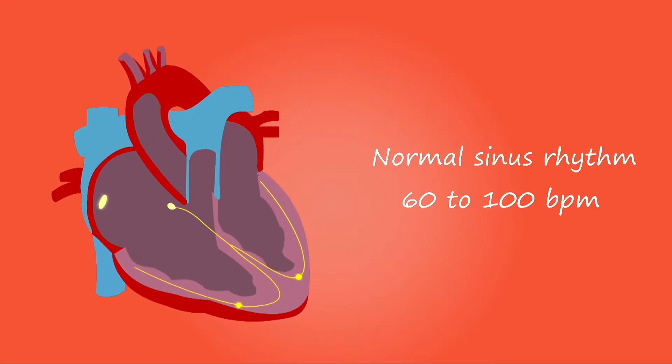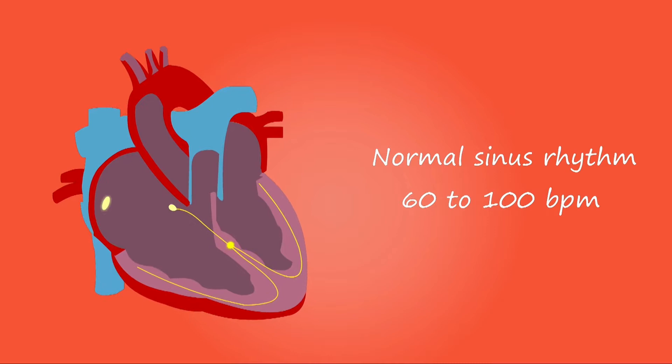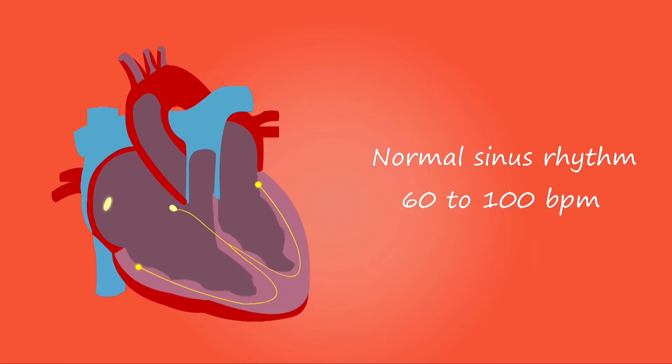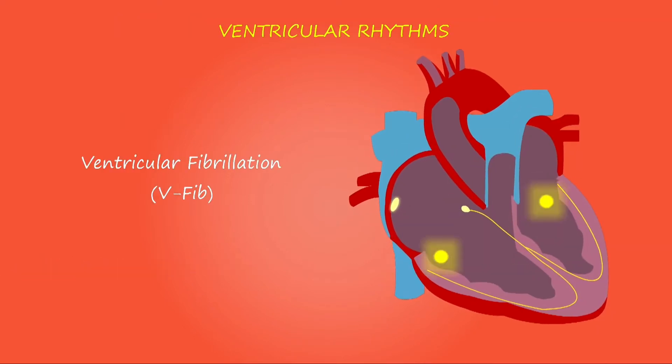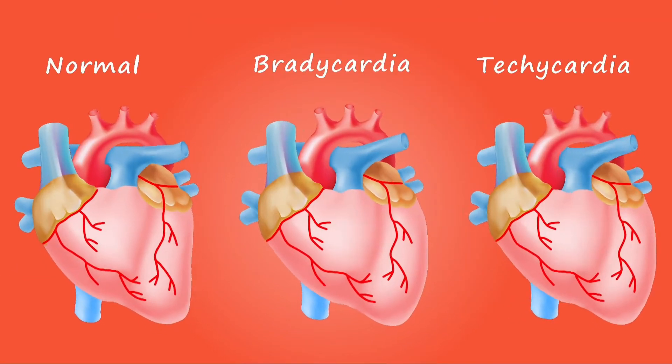In general, our heart beats 60 to 100 times per minute. But in arrhythmia, due to improper working of the sinus or SA node, improper electrical impulses generate, which leads to abnormal beating of the heart, whether irregular, too fast, or too slow.